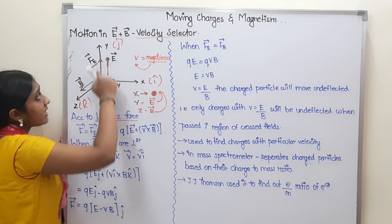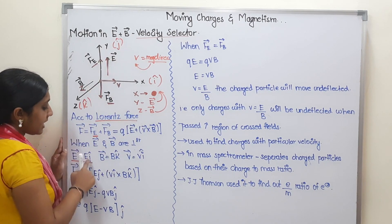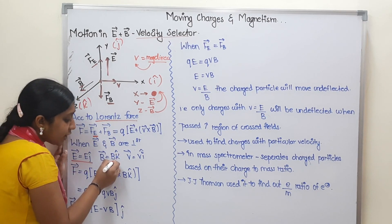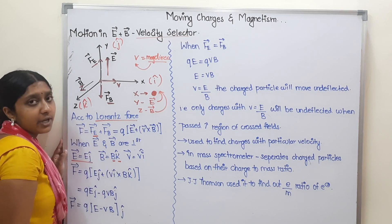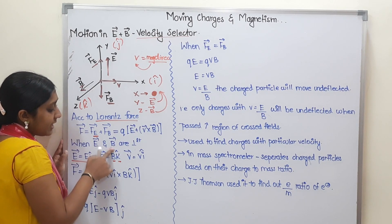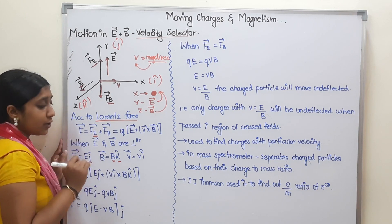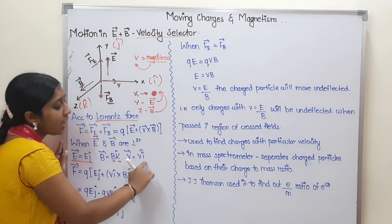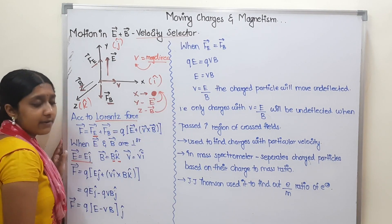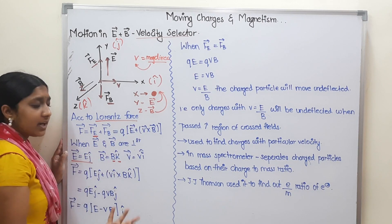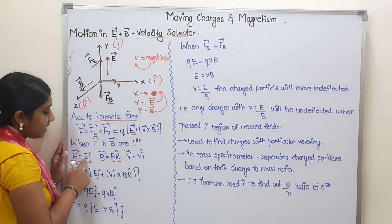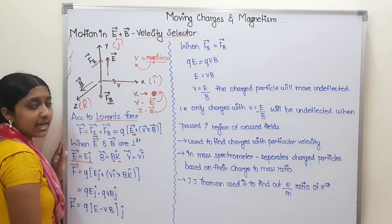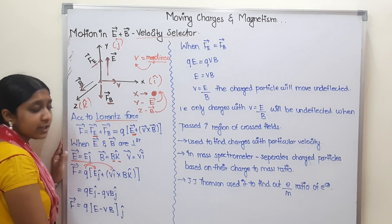Now we can substitute into the formula. It is Q times (E J-cap plus V I-cap cross B K-cap). The V and B are scalar magnitudes, and I-cap cross K-cap is the cross product of unit vectors.